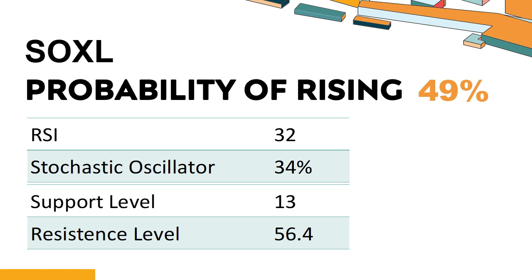In this case, an oversold signal may indicate that a stock is hitting a temporary bottom, but it doesn't necessarily mean that the trend will reverse immediately. SOXL has a 49% probability of rising stock price. Combining multiple technical analysis indicators, SOXL has three bullish signals and four bearish signals.